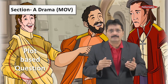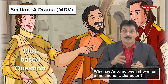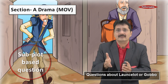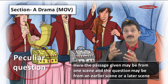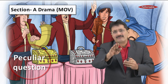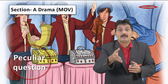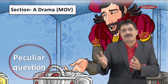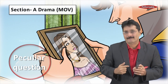Plot-based questions may also be asked — for example, why has Antonio been shown as a melancholic character in Act 1 Scene 1. There could be subplot questions based on Lancelot or Gobbo, who are in the play for comic relief. Then there is a peculiar type: you may get a passage from one scene and a question from an earlier or later scene. For example, the passage may be from Act 2 Scene 7 where Morocco chooses the caskets, but the question may be from Act 2 Scene 1 where Morocco makes an entry.